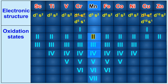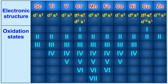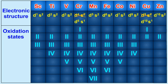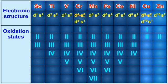Manganese exhibits oxidation states from +2 to +7. The elements in the beginning of the series exhibit fewer oxidation states because they have less number of d electrons which they can lose or contribute for sharing. The elements at the end of the series exhibit fewer oxidation states because they have too many d electrons and hence fewer vacant d orbitals can be involved in bonding.